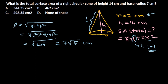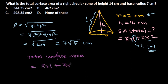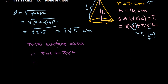Once we find l, it is very easy to calculate the total surface area. The total surface area equals πrl + πr². Substituting values with π = 22/7: that gives us (22/7) × 7 × 7√5 for the first term, plus (22/7) × 7 × 7 for the second term.